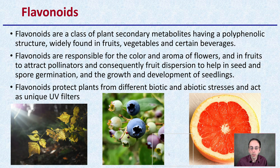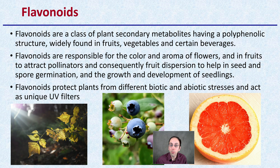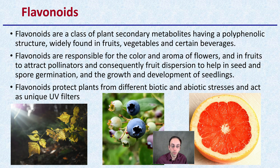Lastly, we have flavonoids. These are a class of plant secondary metabolites that have a polyphenolic structure, widely found in fruits, vegetables, and certain beverages as well. Flavonoids are responsible for the color and aroma of flowers, and in fruits attract pollinators and fruit dispersion to help in seed and spore germination, and the growth and development of seedlings. Flavonoids also protect the plant from different biotic and abiotic stresses and act as unique UV filters.